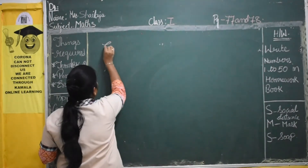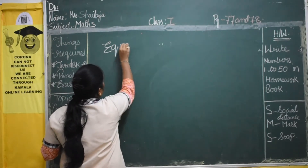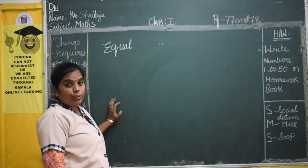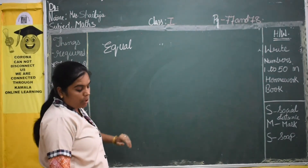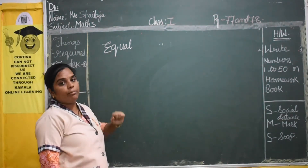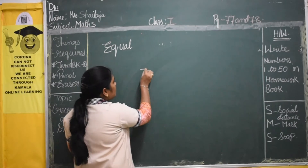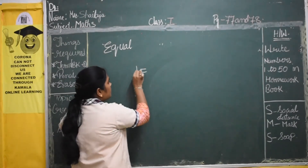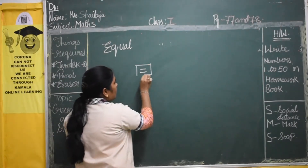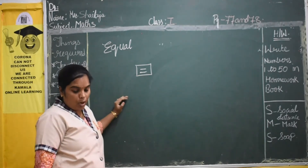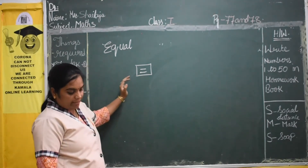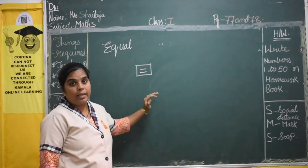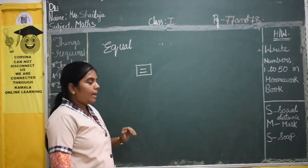E-Q-U-A-L. Equal. So to show this equal, we use this equal symbol. To show equal number, we use this one as the equal symbol.